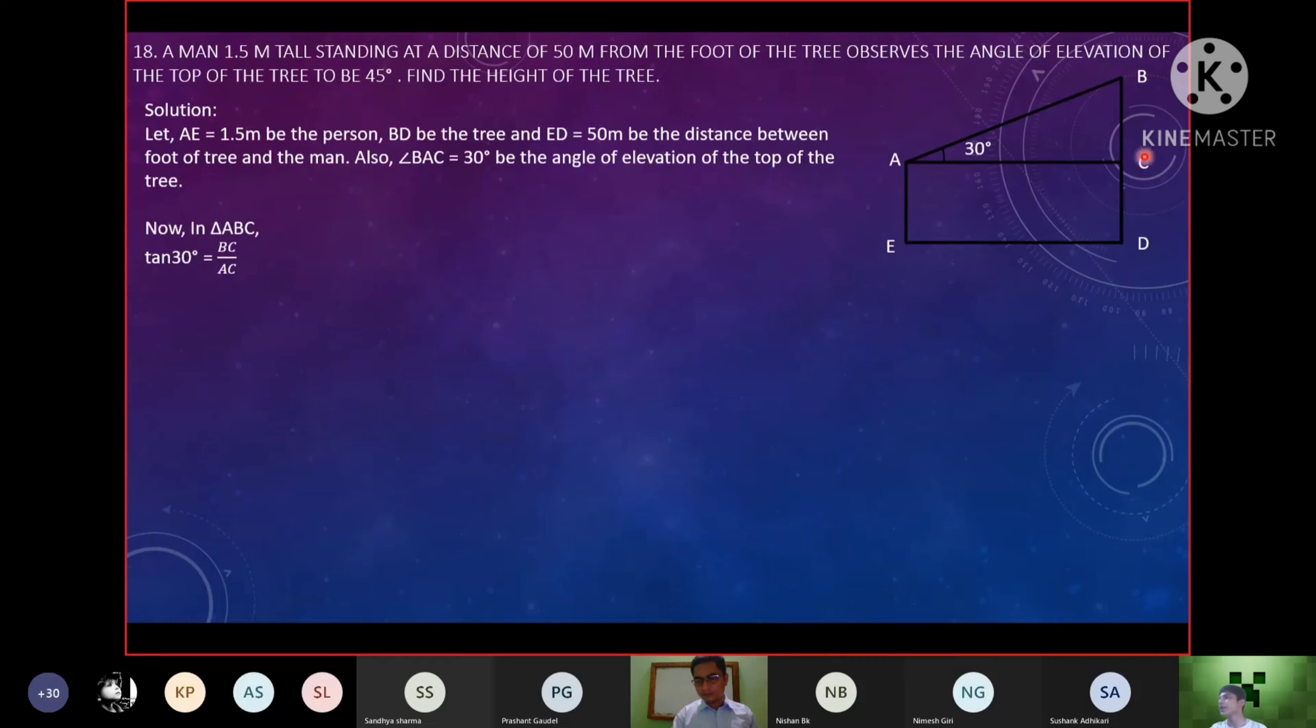In triangle ABC, the angle is 90 degrees. Then we put a tan correlation by tan 30 degrees equals to BC upon AC. Then, as a tan 30 degrees equals to BC upon AC.